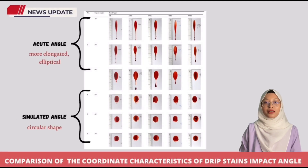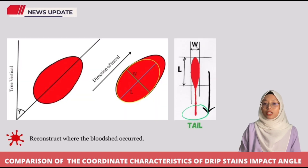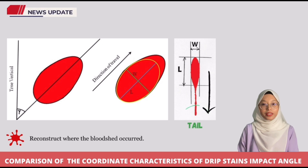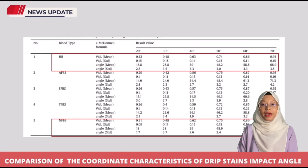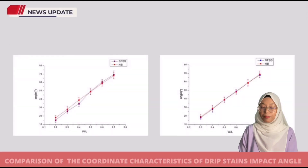The angles used for comparison of the coordinate characteristics of drip stain impact angles range from 20 to 70 degrees. Bloodstain patterns with an acute angle of impact produce more elongated, elliptical or oval shapes — the more acute the angle, the more elongated the stain. The resulting blood stain shape determines the direction of travel and thus the origin of the blood drop, referred to as the directionality of a bloodstain pattern. Based on the data, all blood substitutes simulated impact angles at 50, 60, and 70 degrees showed similar results to human blood. However, at acute angles of 20, 30, and 40 degrees, NFBS showed more similar results to human blood than the others.